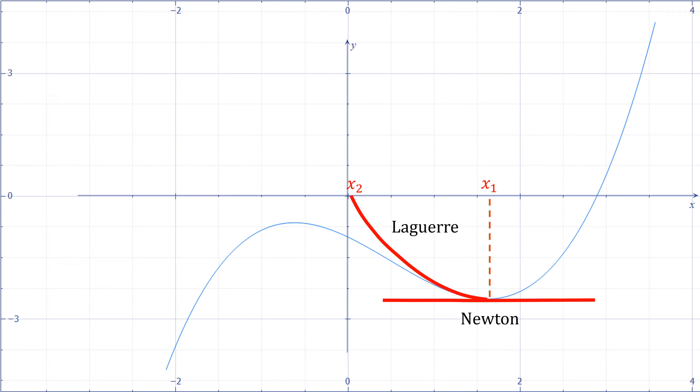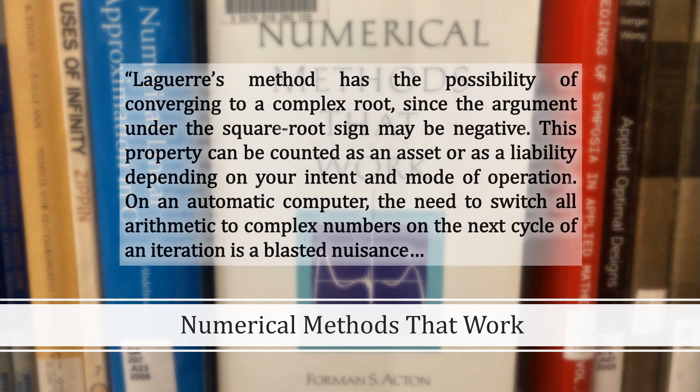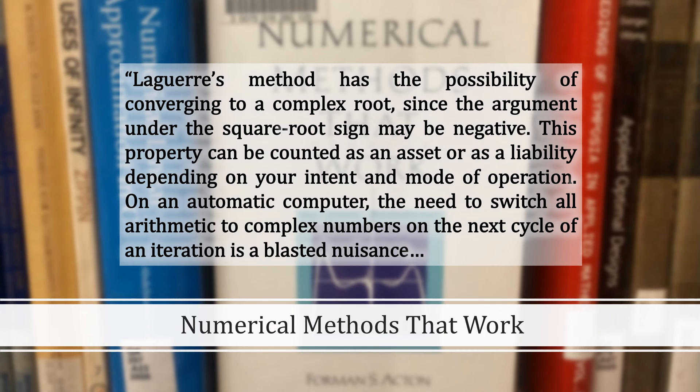Now you might be wondering how come it went to the left instead of the right, and that's because Laguerre is actually heading towards a complex root. For why that happened, let's turn to Numerical Methods That Work by Forman S. Acton, in which he writes: Laguerre's method has the possibility of converging to a complex root since the argument under the square root sign may be negative. This property can be counted as an asset or as a liability depending on your intent and mode of operation.